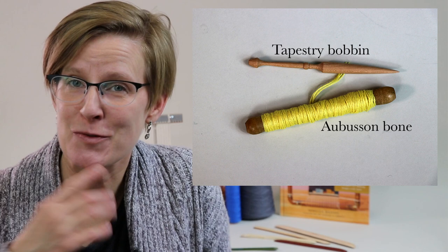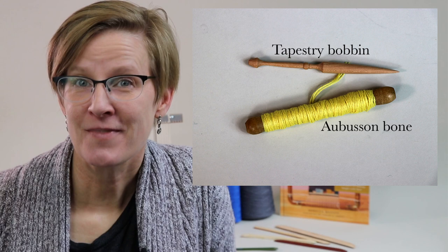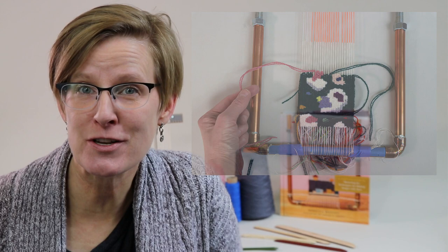There are various ways to manage your weft bundle. A lot of people use things like abusan bones or butterflies to wrap the bundle around as you're passing that tool through the warp. Other people use yarn needles attached to their yarn. Other people just let the wefts hang if you're doing things with lots of small color areas. You don't need to use a tool. You can just use a long piece of yarn. There are lots of other embroidery things that people use to hold their wefts and we'll look at some of those in this video.